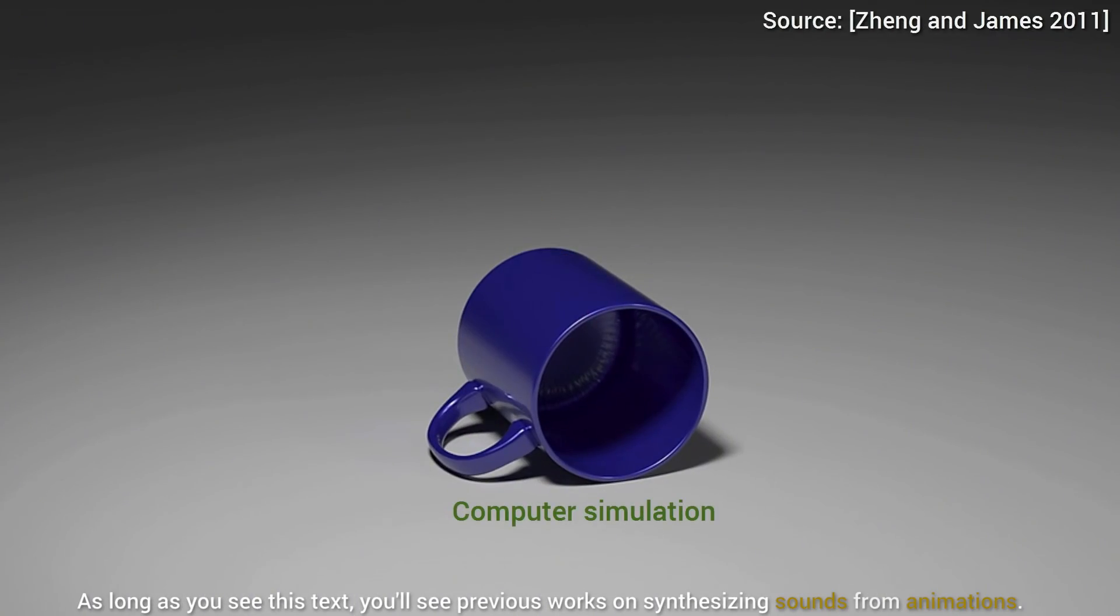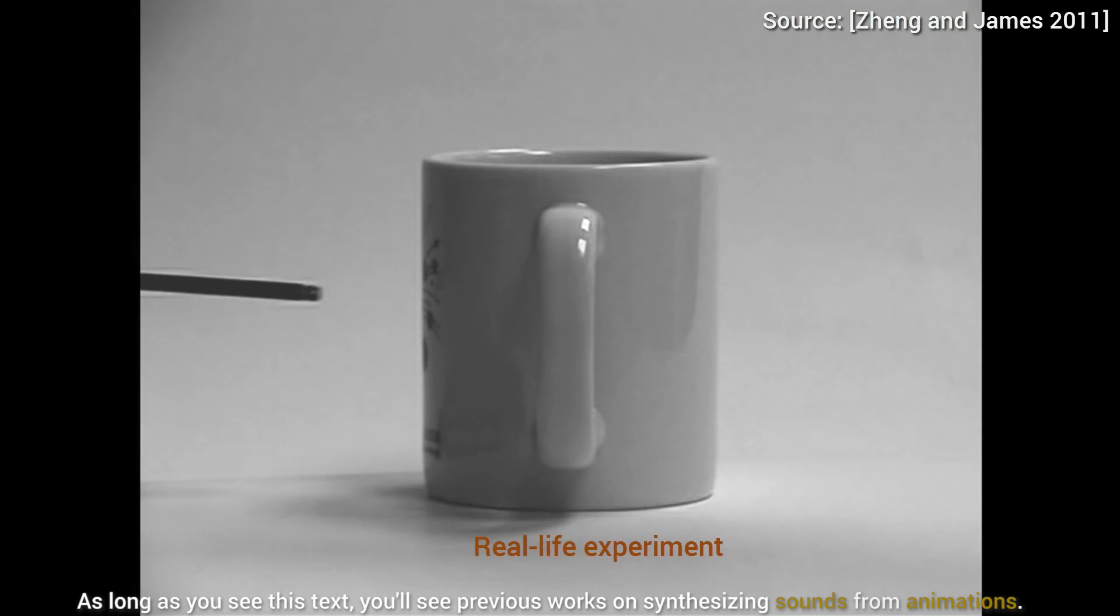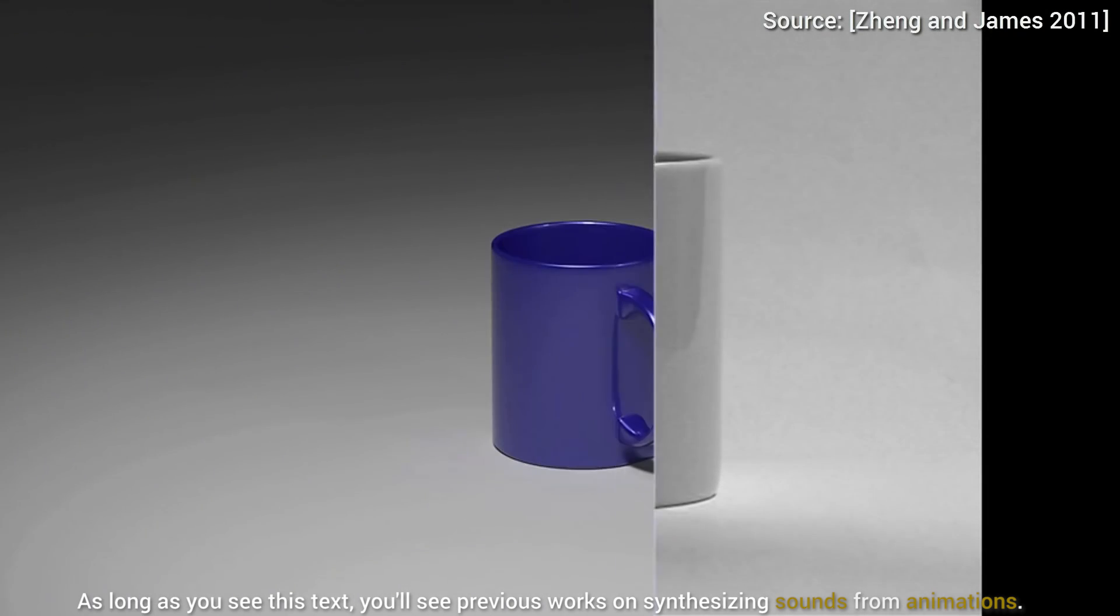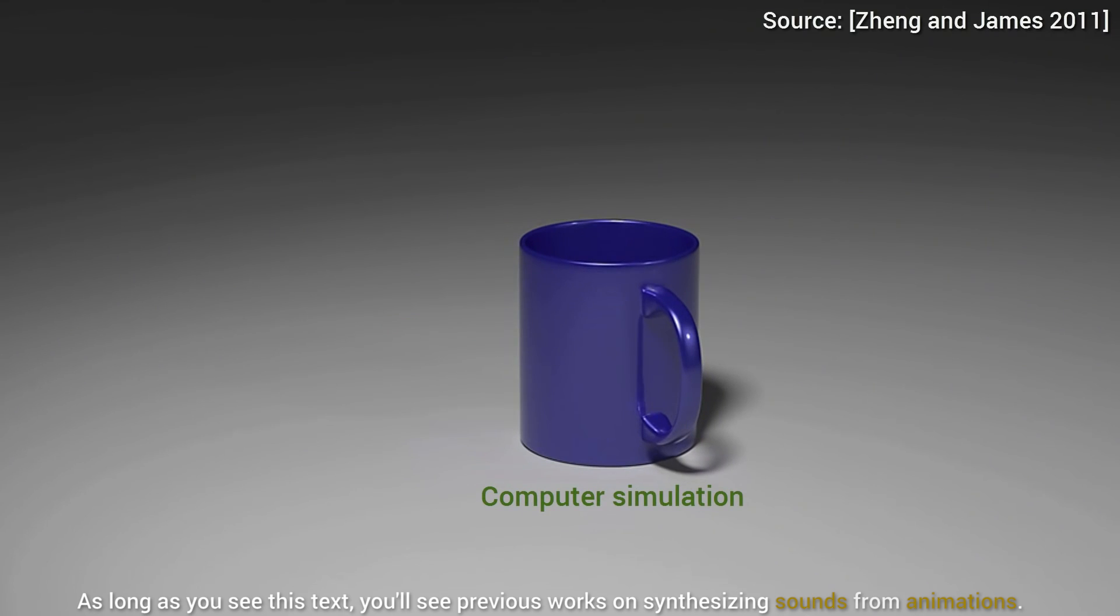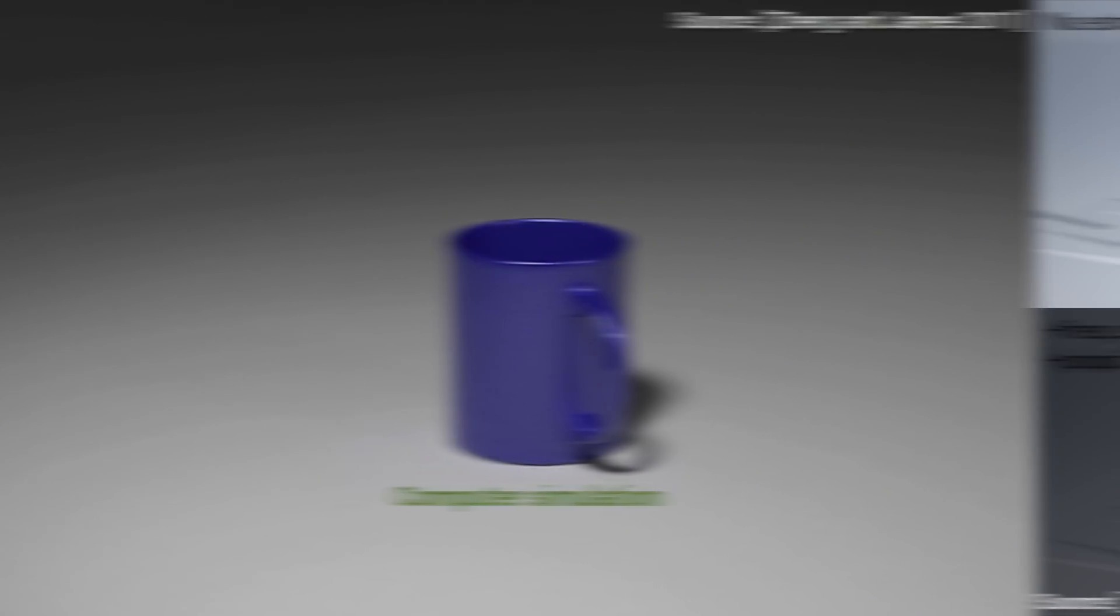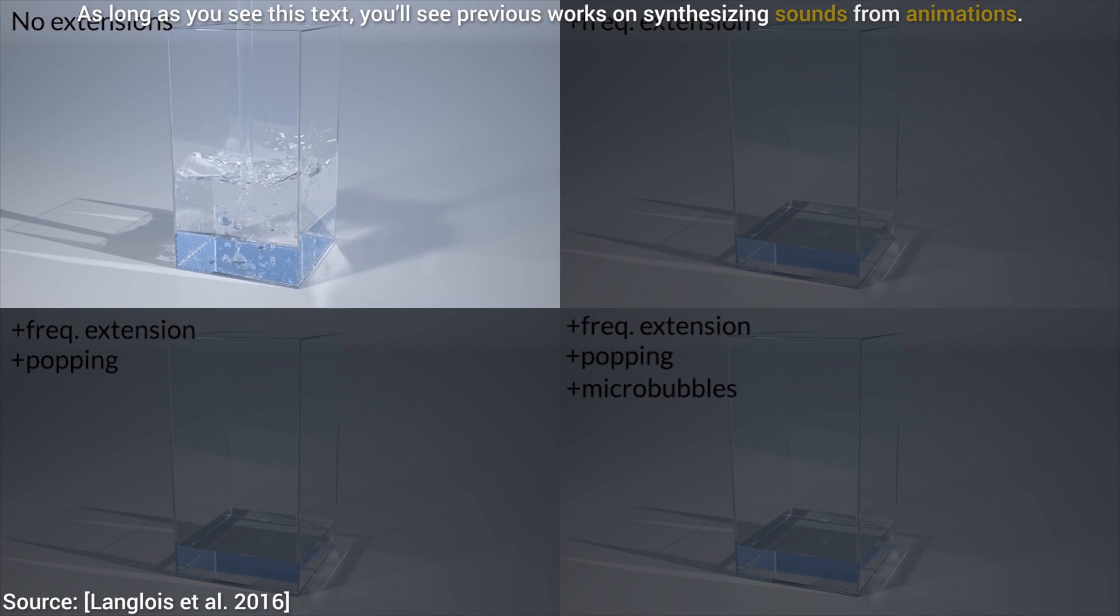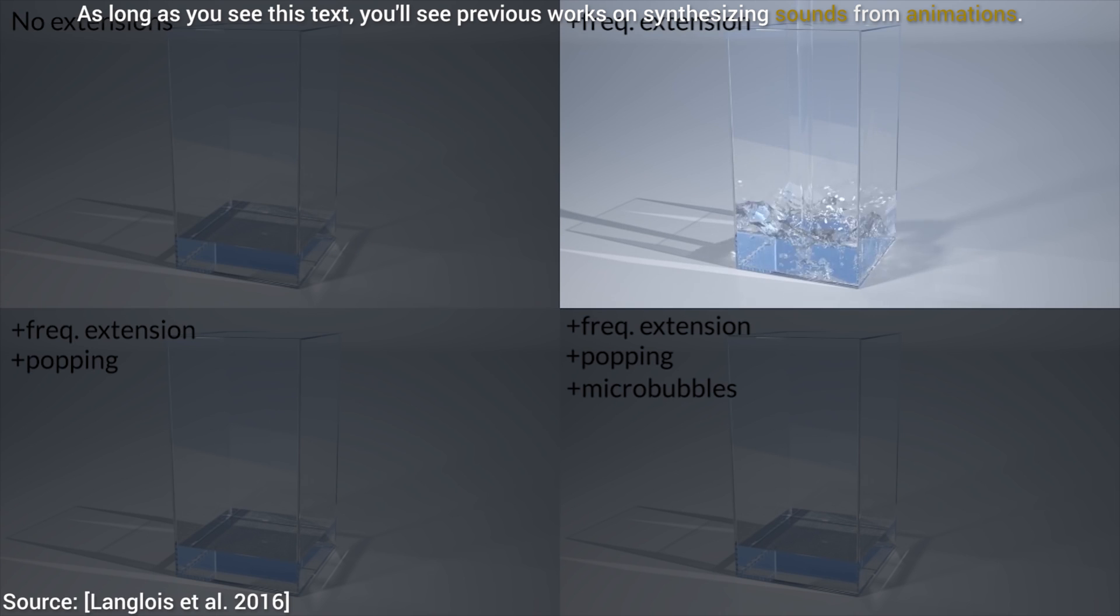Earlier we had some delightful discussions on synthesizing sound from animations. The input would be a sequence, for instance a video depicting the complete and utter destruction of plates, wooden bunnies, or footage of bubbling water. And the output should be a physical simulation that yields appropriate sound effects for the observed phenomenon. In short, input animation, output synthesize sound effects for this animation.